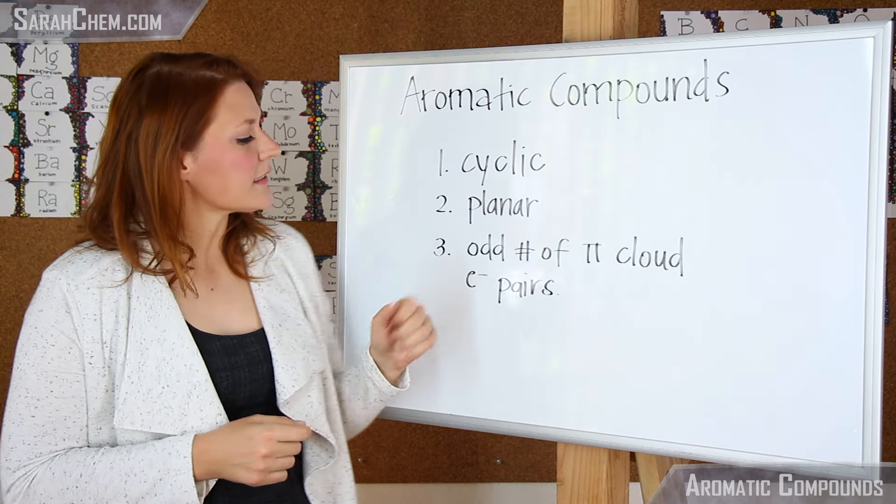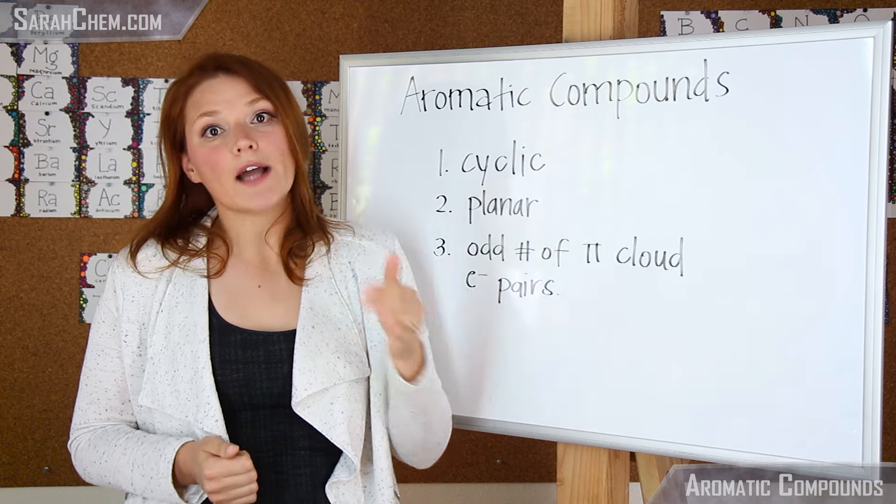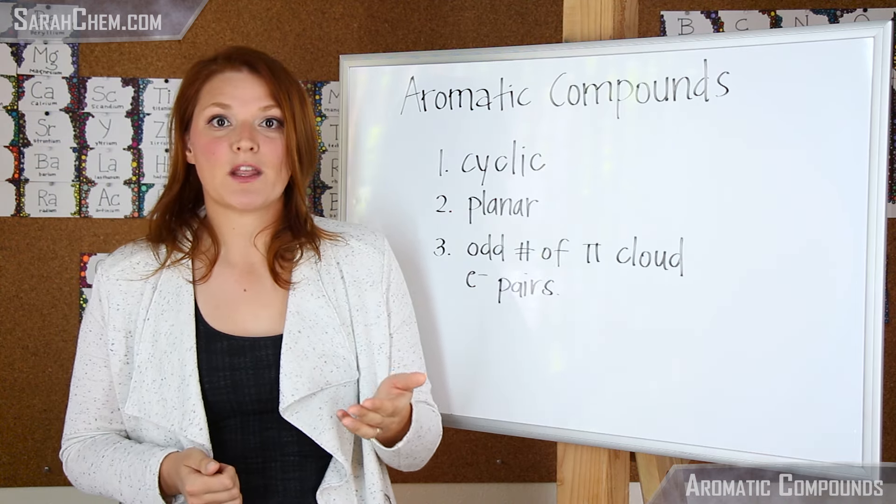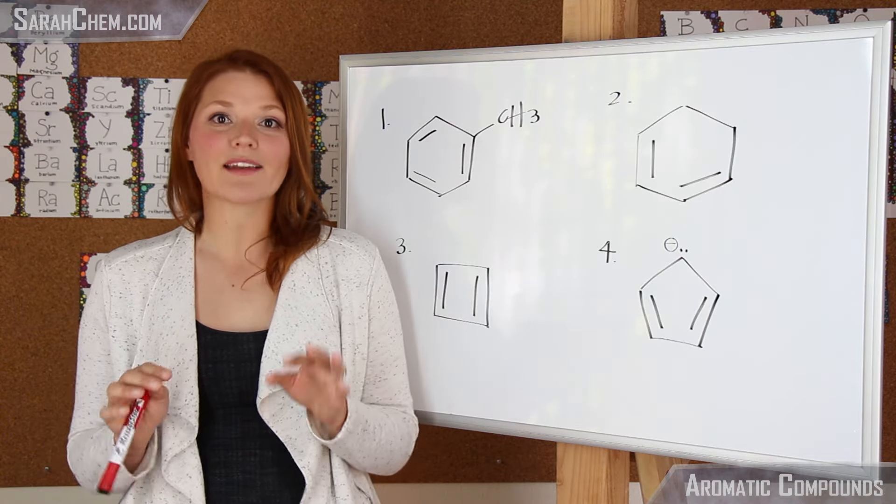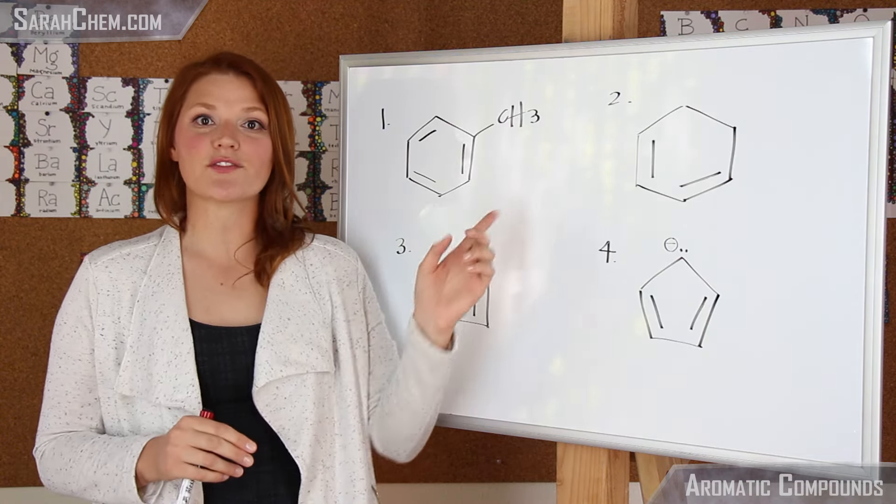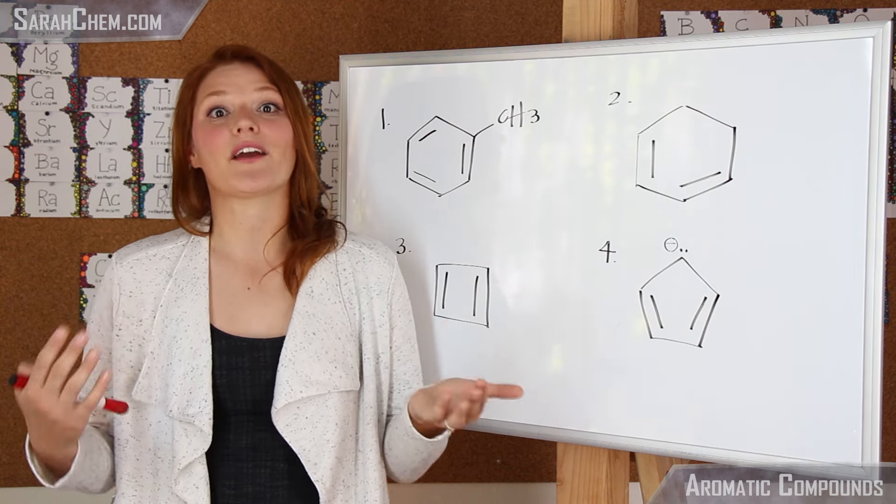The third and final piece is that you're going to have an odd number of pi cloud electron pairs. So let's see what this looks like in practice. Now let's systematically apply these three rules to each of these four compounds to determine whether or not they're going to be aromatic.